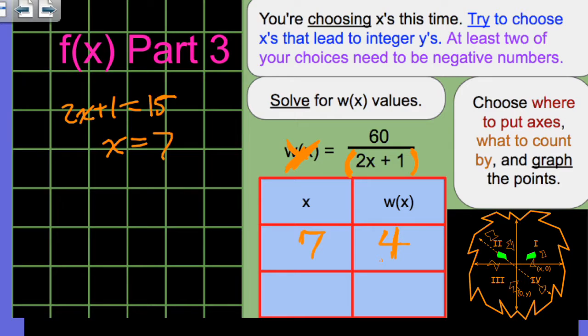See if you can figure out an X value that will force your answer to be a whole number, positive or negative. Notice this: at least two of your choices need to be negative numbers when you're doing this activity. Two of your choices in each graph set have to be negative numbers.